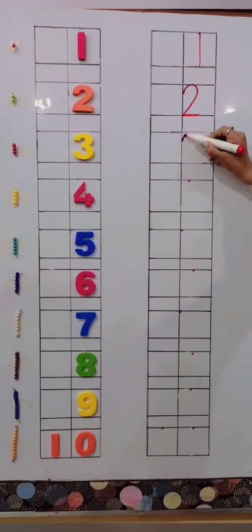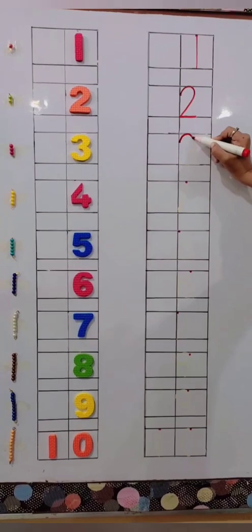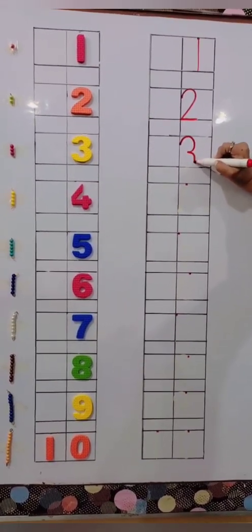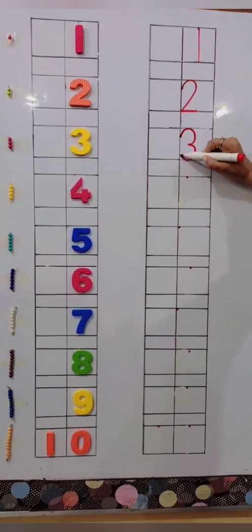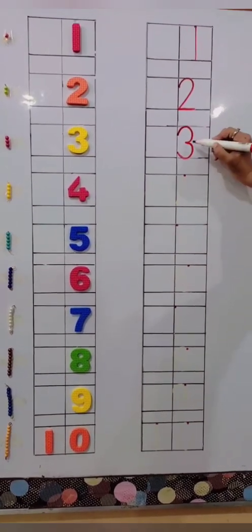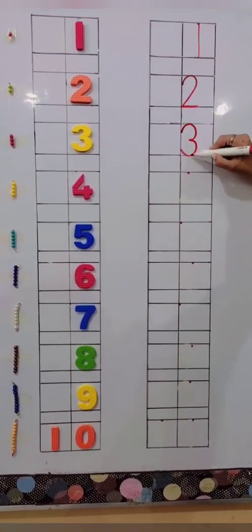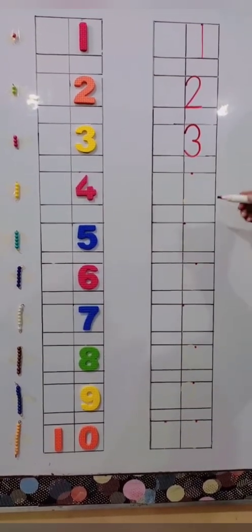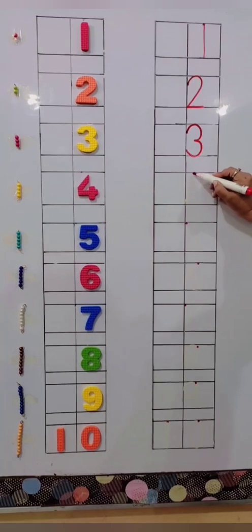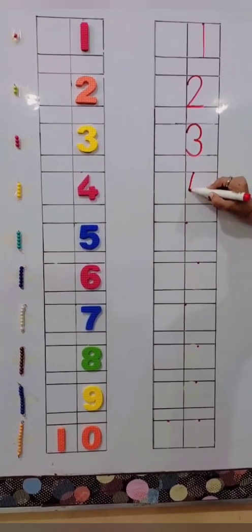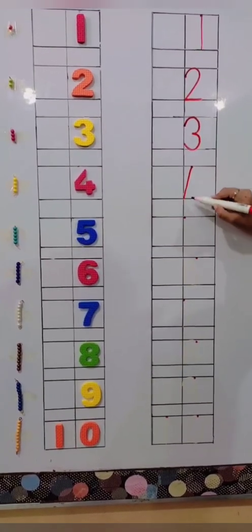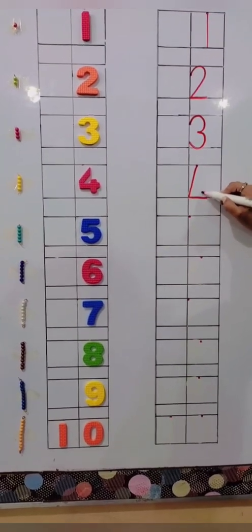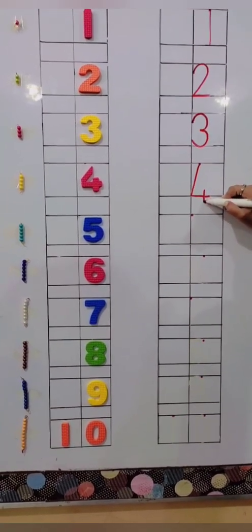What's come after 2? 3. 3 is round and round. 3 is round and round. What's come after 3? 4. 4 is like sitting on a chair. 4 is like sitting on a chair.